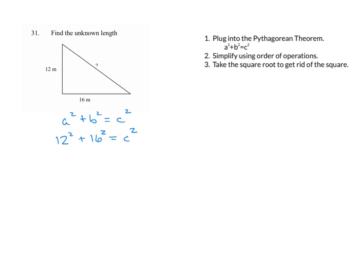12 squared, if you're not sure what that's equal to, let's go ahead and multiply it out. 2 times 2 is 4. 2 times 1 is 2. 1 times 2 is 2, and 1 times 1 is 1. Add, we get 144.